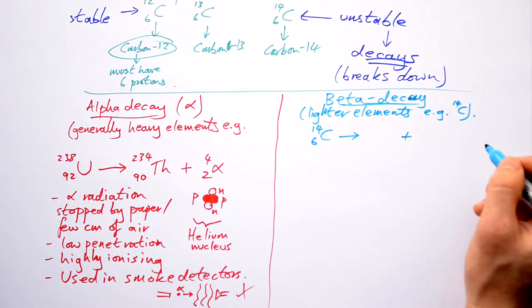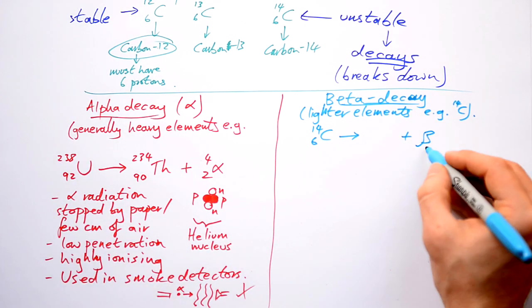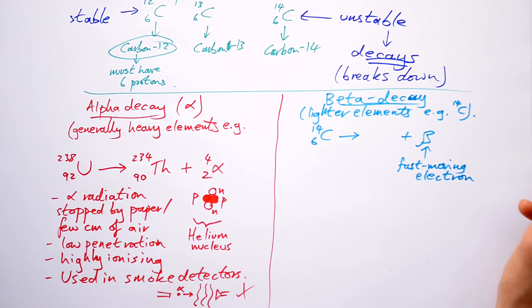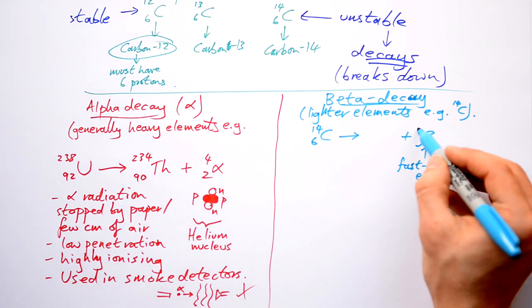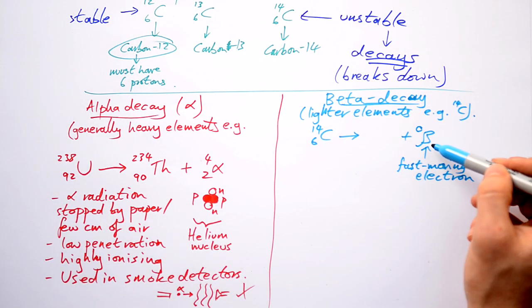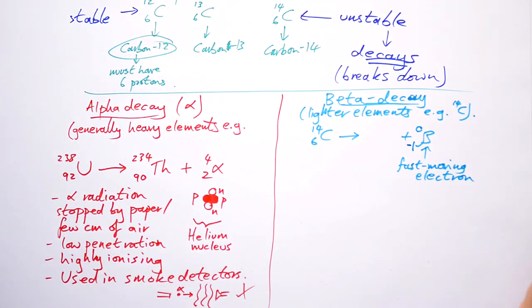And instead of giving out an alpha particle this time, it actually gives out a beta particle. Now, a beta particle is just a fast-moving electron. So what are its numbers going to be? Well, we said that the mass of an electron is effectively zero, so we're just going to put zero there. But an electron is the opposite of a proton in some ways because it has the opposite charge. So this bottom number, the atomic number of an electron, is minus one.